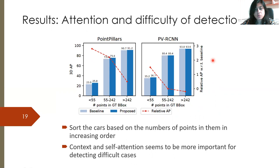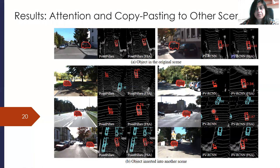We also analyze attention and the difficulty of detection. We sorted the number of cars based on the number of points in them in increasing order — fewer than 55, 55 to 242, and greater than 242 — across Point Pillars and PV-RCNN. We find that context and self-attention seems to be more important for detecting difficult cases, where there are the fewest points. We find the greatest increase in relative AP with respect to the baseline, indicating that context helps more for difficult cases.